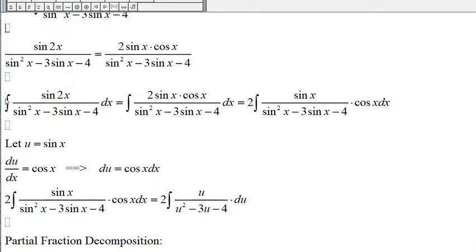So this is the original integral. The top is 2 sine x cosine of x, and then we move the cosine of x and place it right next to the dx.